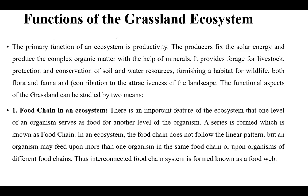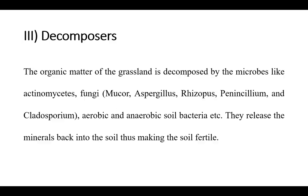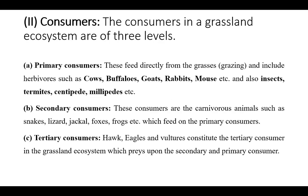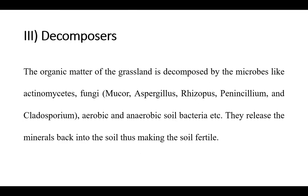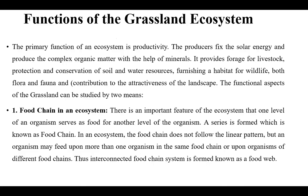Now let us discuss the functions of grassland ecosystem. The first function is the food chain: it provides a physical environment for all the living organisms in the form of a food chain, where producers are consumed by primary consumers, secondary consumers consume the primary ones, and tertiary consumers consume the secondary ones.